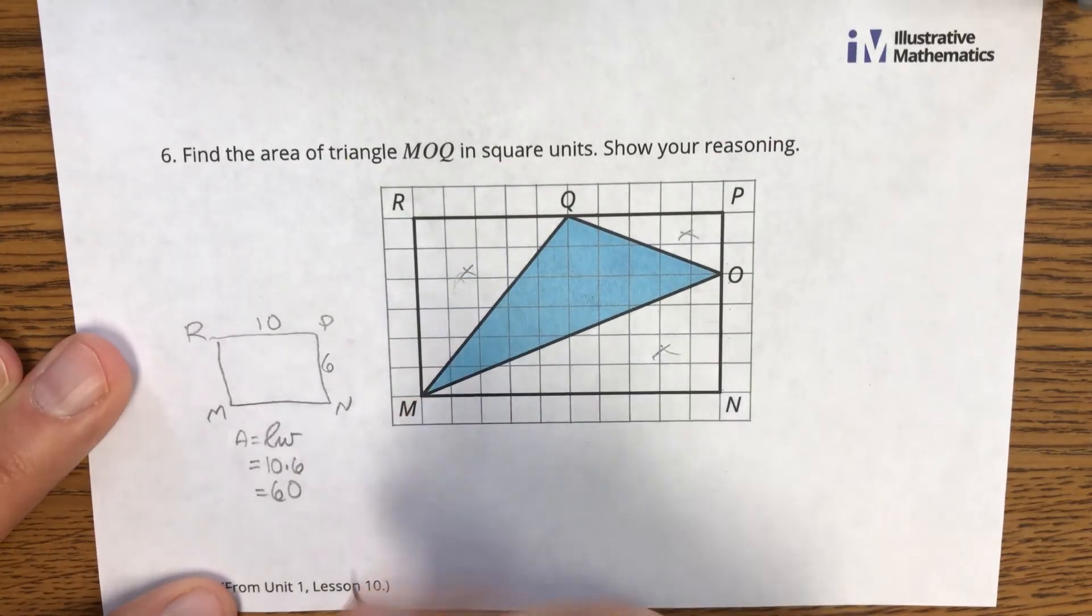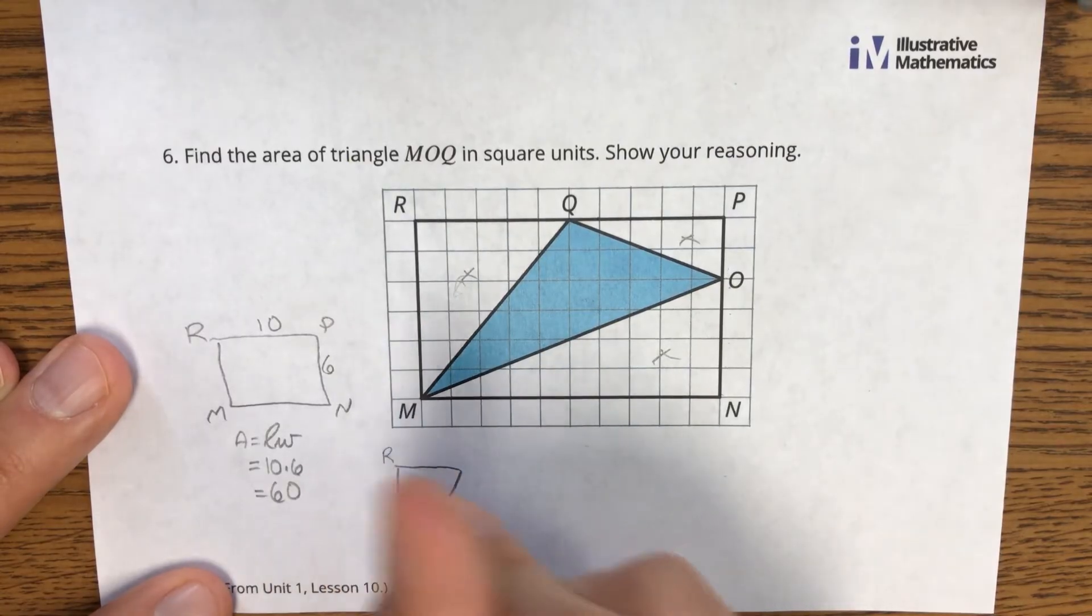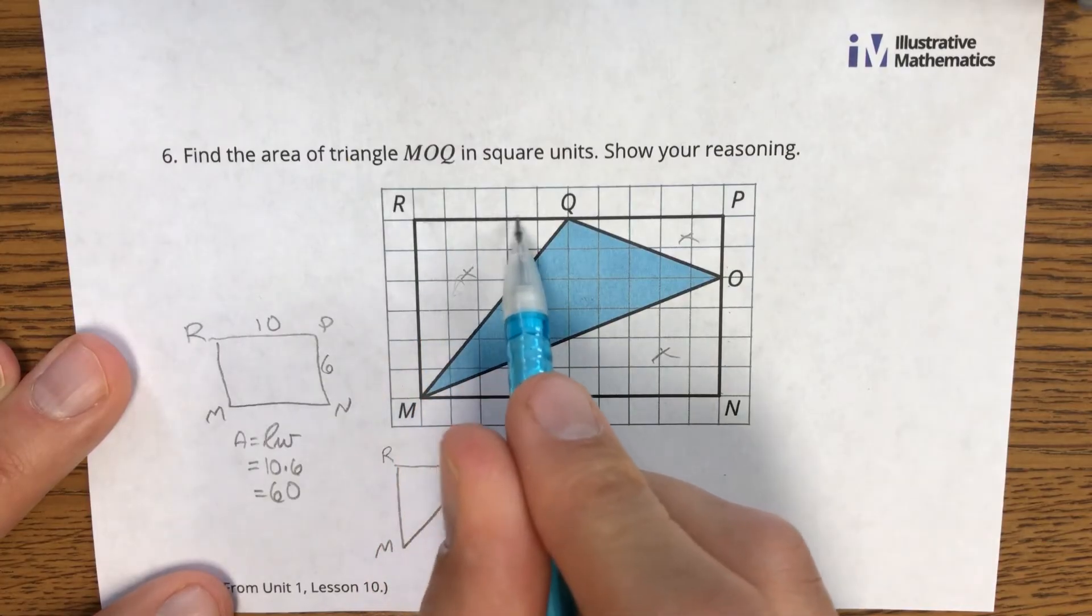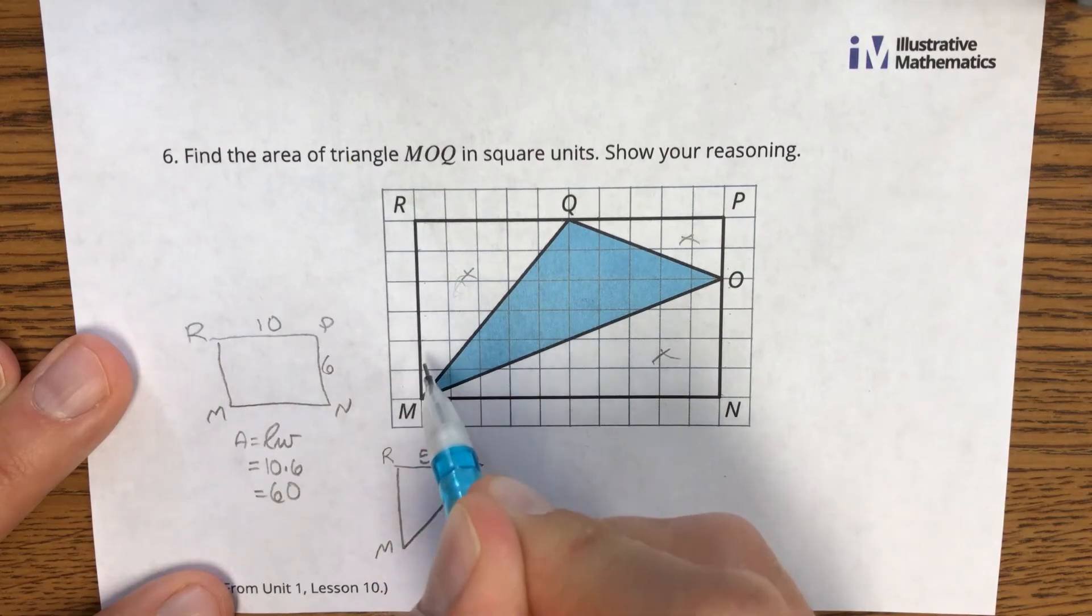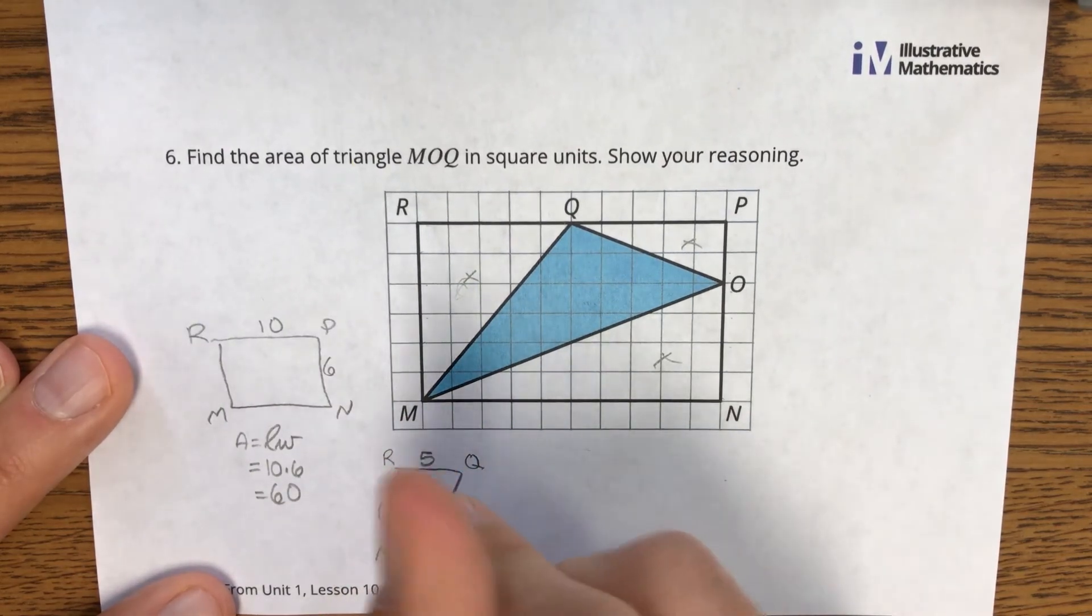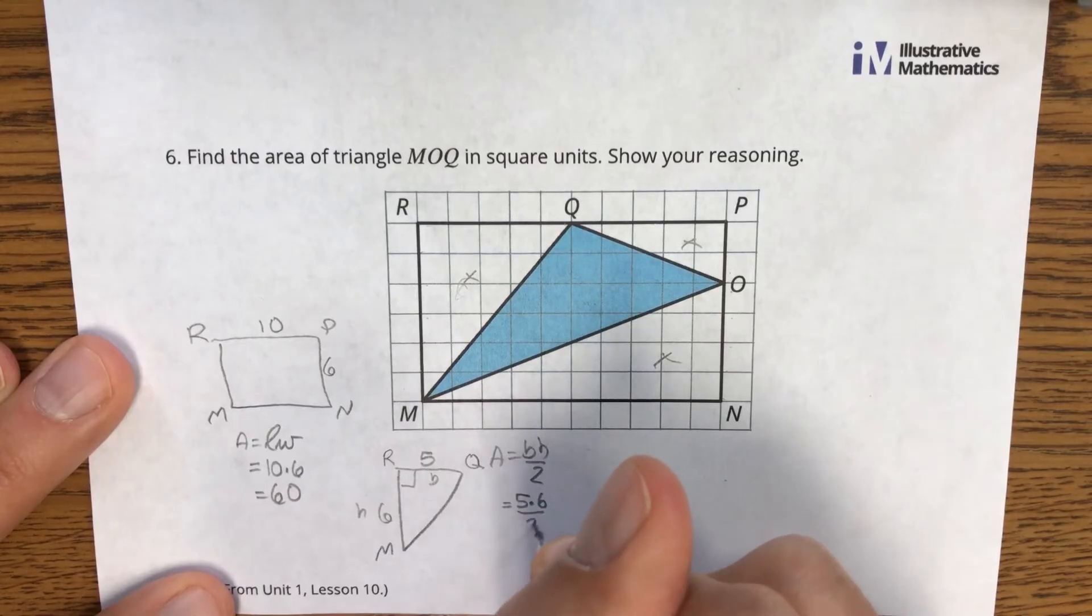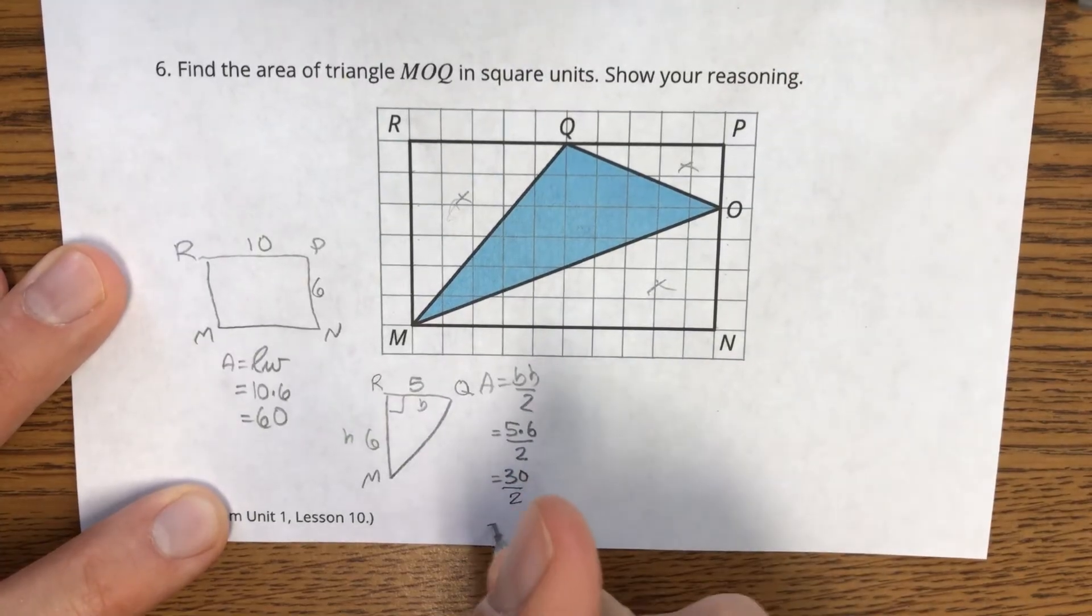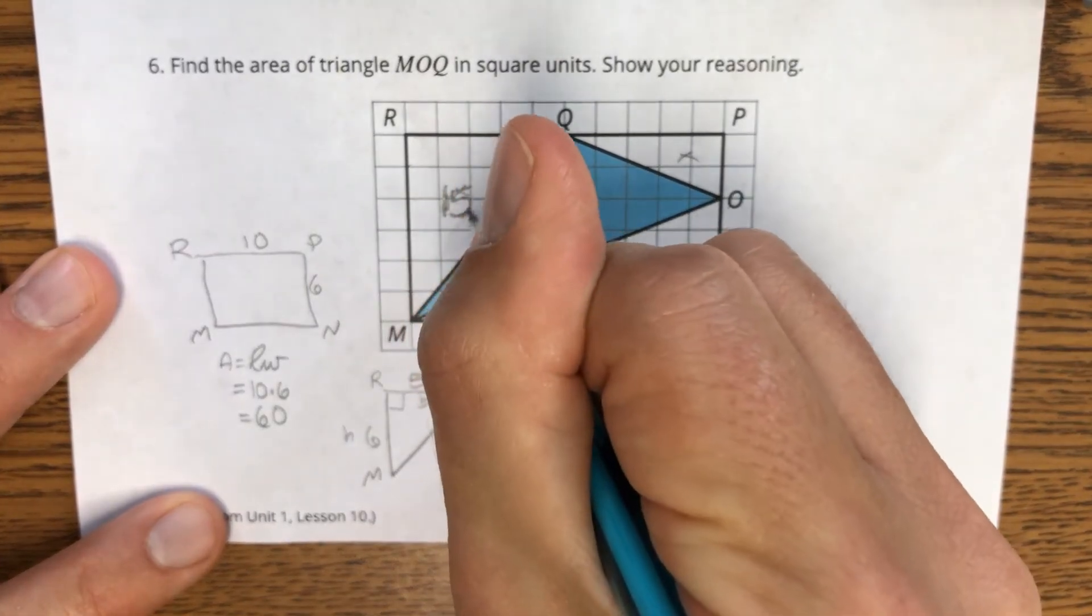Let's go to this triangle here. This is triangle R, Q, M. Well, one, two, three, four, five from R to Q. One, two, three, four, five, six from R to M. Those are my bases and heights. Area for a triangle is base times height divided by two. So five times six divided by two is 30 divided by two is 15. So this represents an area of 15.